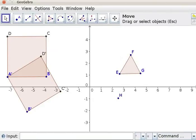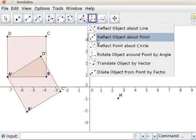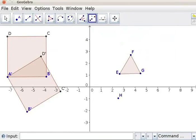Click on Dilate Object from Point by Factor tool. Click on the triangle.